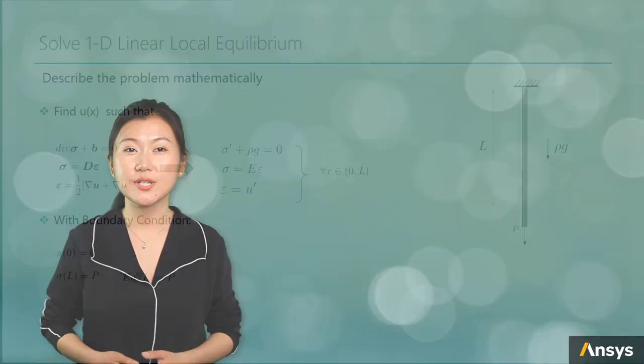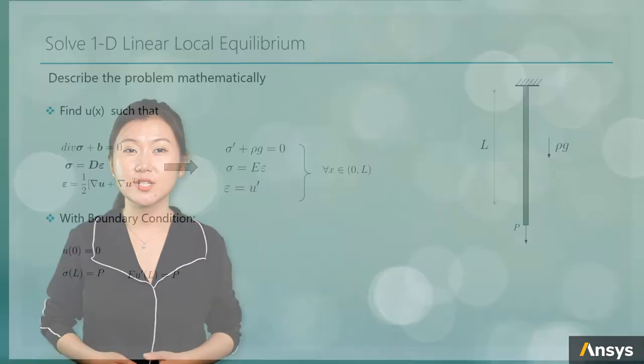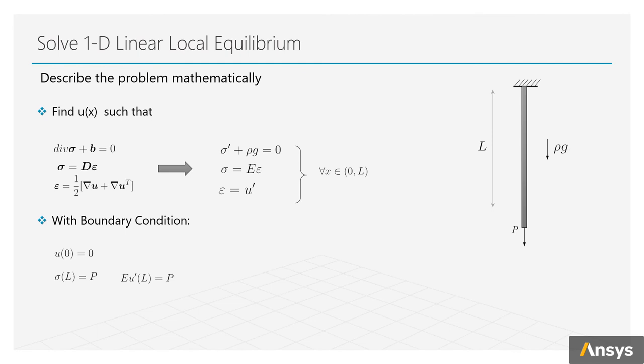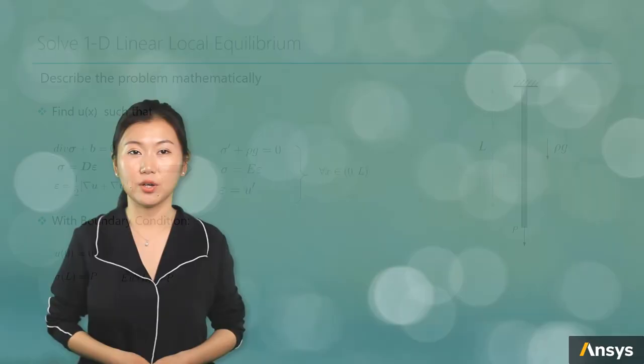First of all, we need to describe the problem mathematically. So, what we're looking for is the deformation function u(x) such that the local equilibrium is satisfied for all x from 0 to length L on the bar. With given boundary conditions that u(0) equals to 0 because it's fixed and stress at the bottom sigma(L) equals to P.